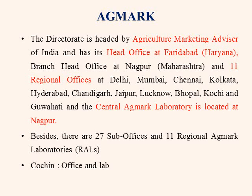AGMARK has 11 regional offices at different states in India and 11 regional AGMARK laboratories, which are known as RALs, and one central AGMARK laboratory, which is known as CAL. The CAL is located at Nagpur. Besides these, it also has 27 sub-offices, and one office is present in Cochin in Kerala, which has both the office as well as the laboratory.